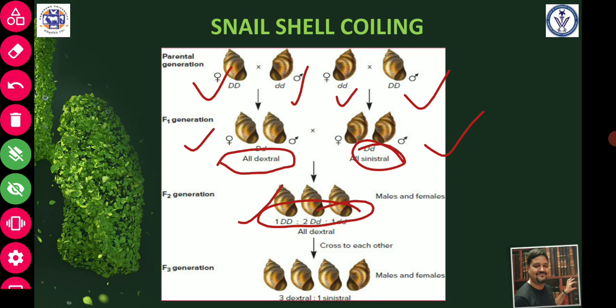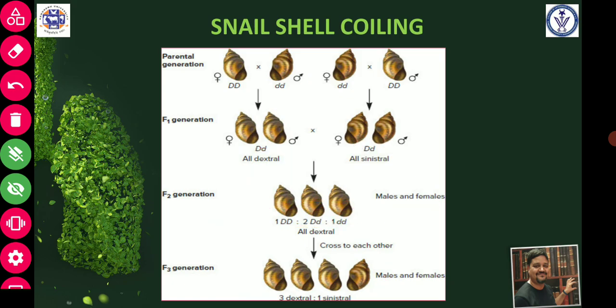All dextral coiled snails were obtained in F2 because of the maternal inheritance effect of the mother. However, when F2 was self-fertilized, the maternal effect was no longer observed. The ratio obtained was 3 dextral to 1 sinistral, as expected in normal Mendelian inheritance. This is because in the F2 generation, when crossed with each other, they displayed their original characteristics as per their genotype — 3 dextral and 1 sinistral. This is how cytoplasmic inheritance works.